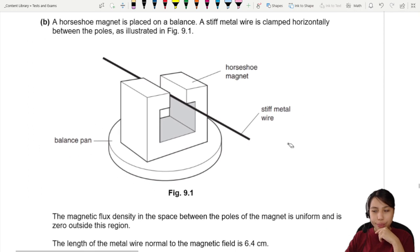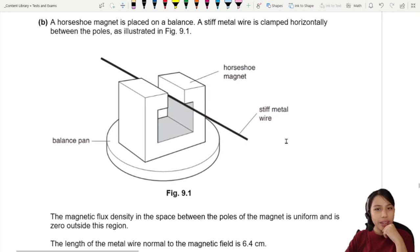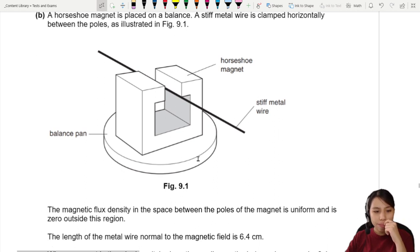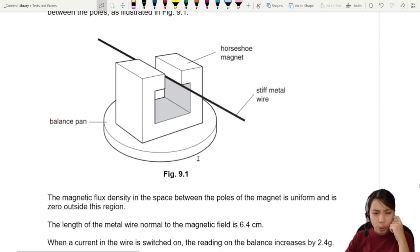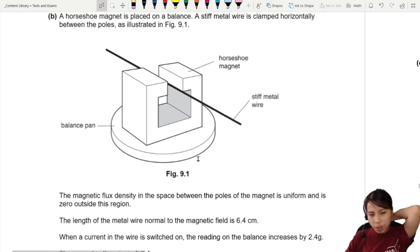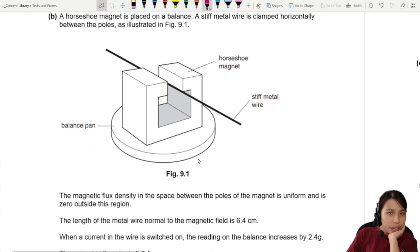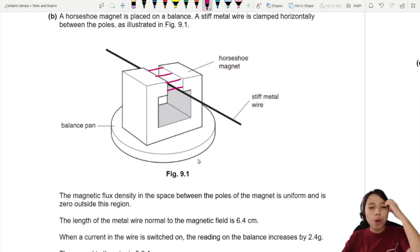Horseshoe magnet is placed on a balance. A stiff metal wire is clamped horizontally between the poles. Magnetic flux density in the space between the poles is uniform and zero outside the region. So you can kind of imagine you have some magnetic field here. So the length of wire normal to the magnetic field is 6.4. I'm going to assume that it's only this part, 6.4 cm. That's L inside the magnetic field.